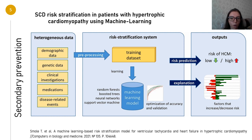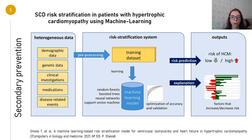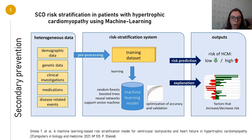As an example of secondary prevention, I chose sudden cardiac death risk stratification in patients with hypertrophic cardiomyopathy. In the research, Small and his colleagues developed a new model for risk stratification in patients with hypertrophic cardiomyopathy based on a broad set of methods: random forest, boosting trees, and support vector machine.